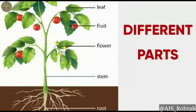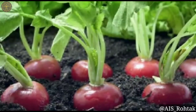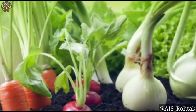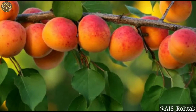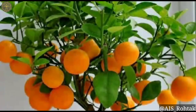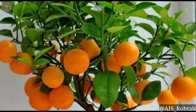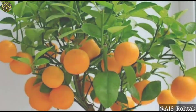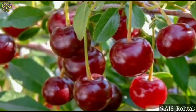We eat roots of some plants like radish, carrot, beetroot etc. as vegetables. Fruits of some plants are also used as food. These fruits are mango, apple, orange etc. These fruits are eaten raw as they are tasty. They are juicy and rich in vitamins and minerals.